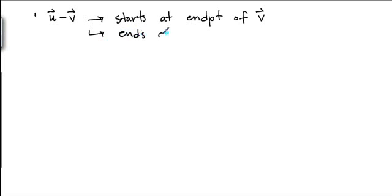And we've got to be a little bit careful about the starting and end points. That's a little bit different than vector addition. u minus v starts at the endpoint of v and it ends at the endpoint of u.